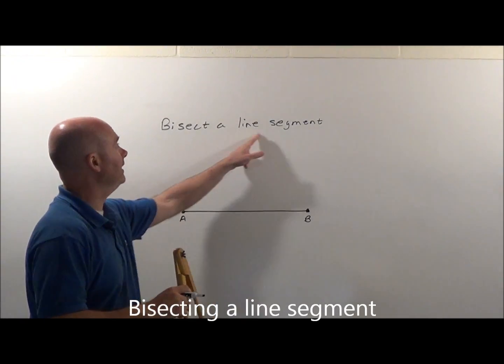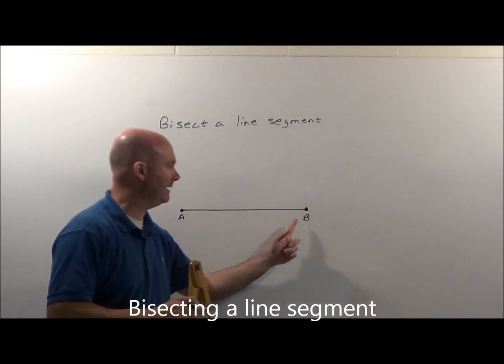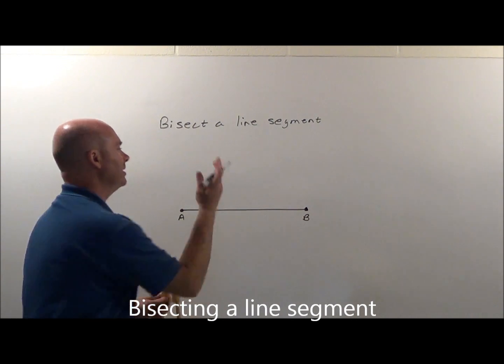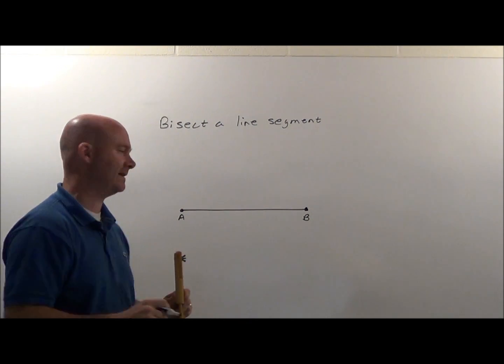Alright, we want to bisect a line segment, so we have line segment AB, and we want to basically cut it in half, to bisect it.